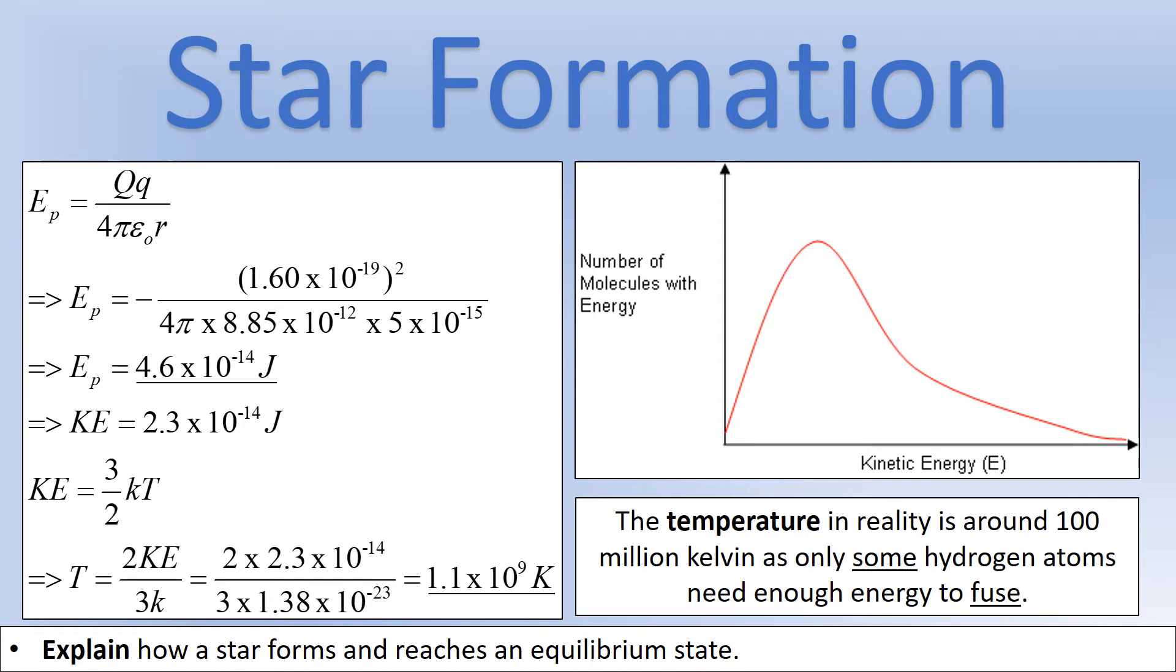However, what you should also know from the kinetic theory part of the course is that at a given temperature, gas particles have a range of kinetic energies given by a Maxwell-Boltzmann distribution. So actually, the temperature doesn't quite need to be 1.1 billion. Being a few hundred million Kelvin will be sufficient to give some hydrogen atoms enough energy to fuse and form a stable star.